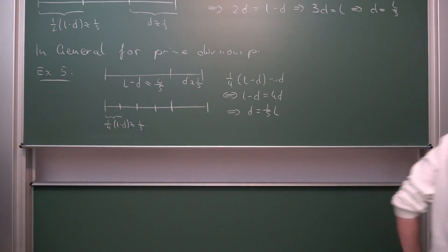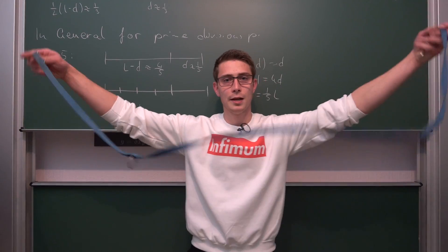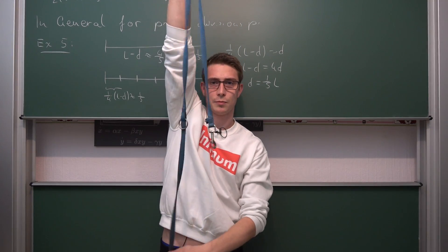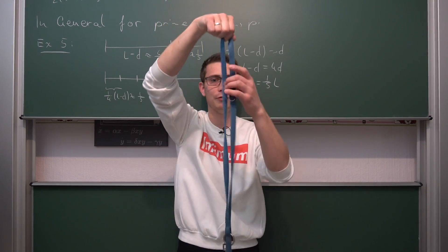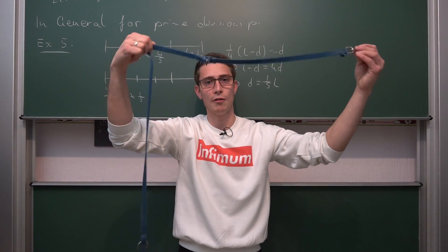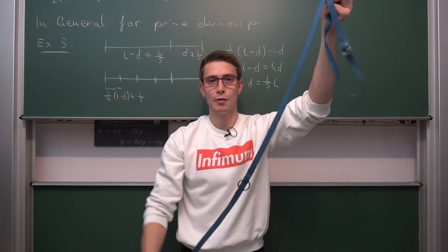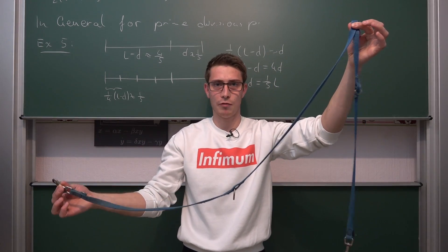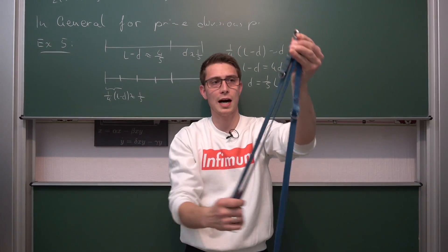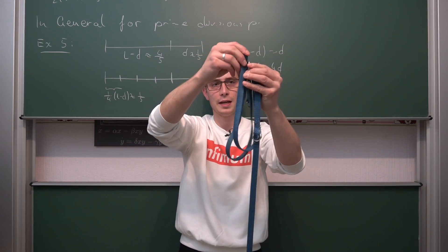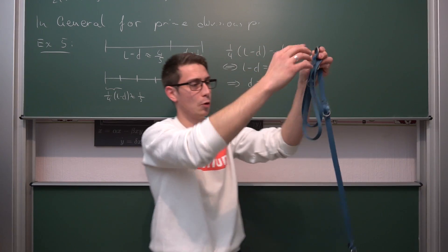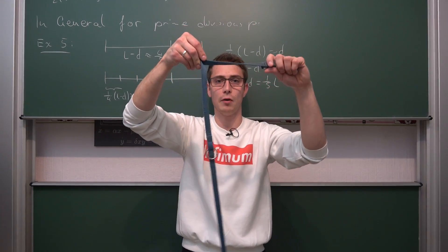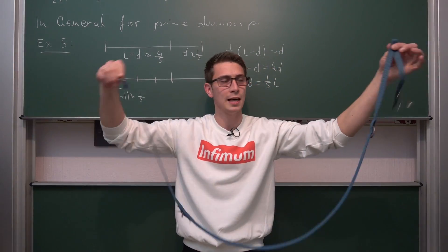I can demonstrate it for the number 5 once again using the leash. Here is our leash again and I'm going to take a very terrible guess — this is definitely not a fifth. We guess that this right here is our fifth at the moment, meaning this right here must be four fifths. For the example of 5, we're going to halve it and then halve the half once again — quarter it — and now we grab at the point where it's going to be a quarter.